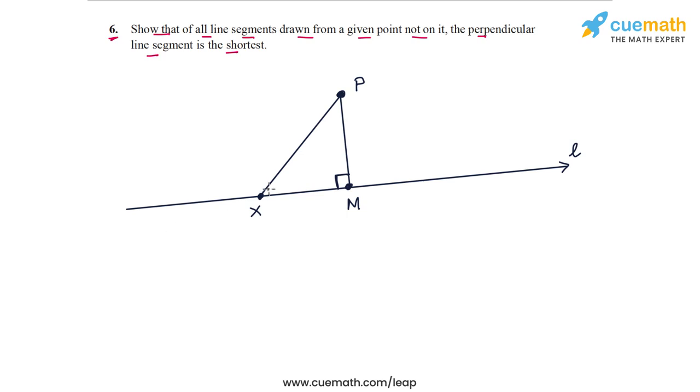So what I've done is I've taken another point on the line, any other point x, and joined Px. And I will show that no matter where x is, PM will surely be less than Px, and that means that the shortest line segment will be PM.